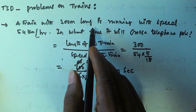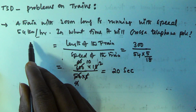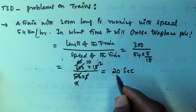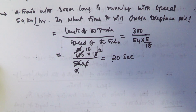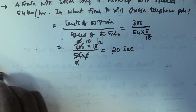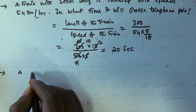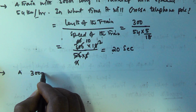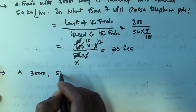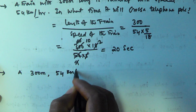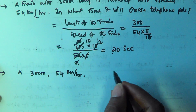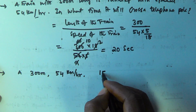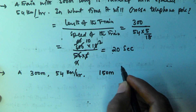Now the second problem: a train 300 meters long is running at 54 km per hour. In what time will it cross a platform that is 150 meters long?